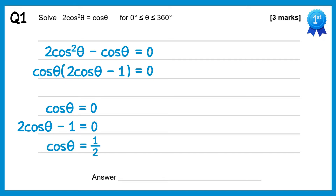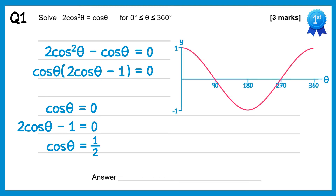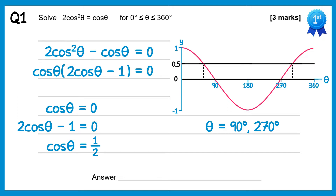We can solve both of these equations using the graph. Starting with cosθ equals 0, we draw a horizontal line at 0. You can see there are two solutions: θ equals 90 and 270. We'll also draw a horizontal line at 1/2, and there are two solutions to this as well. The first is found by doing inverse cos of 1/2, which gives 60 degrees. The other comes from symmetry of the graph: 360 take away 60 is 300.